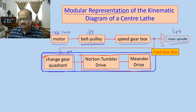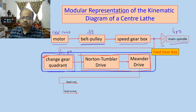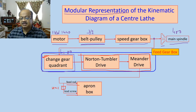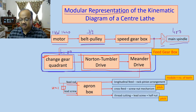The Meander drive output goes into two elements: the feed rod and the lead screw. Quite often there is a small pair of gears between the feed rod and the lead screw, and their transmission ratio is often 1; if it is not 1, you have to calculate it. The outputs of both the feed rod and lead screw enter the apron box, which has three outputs: automatic longitudinal feed, automatic cross feed, and thread cutting.